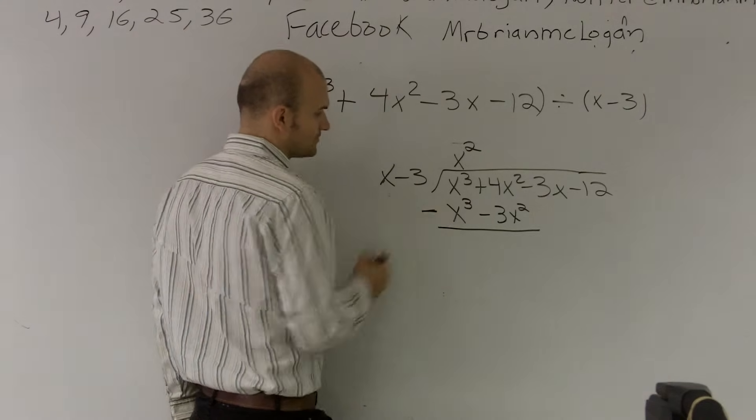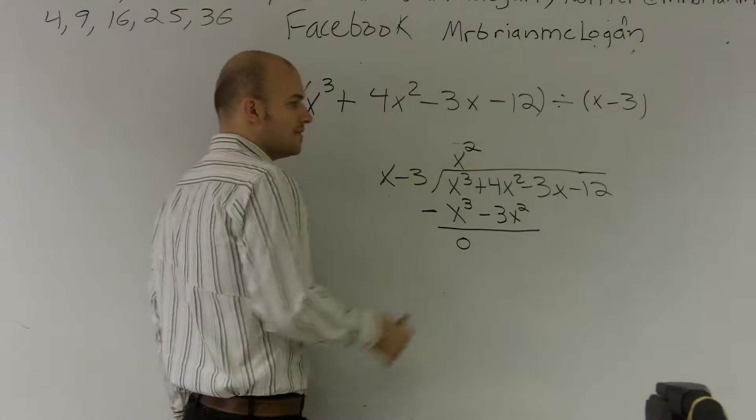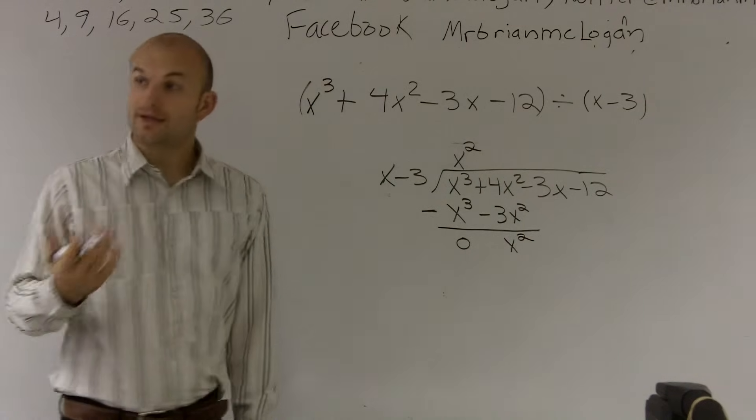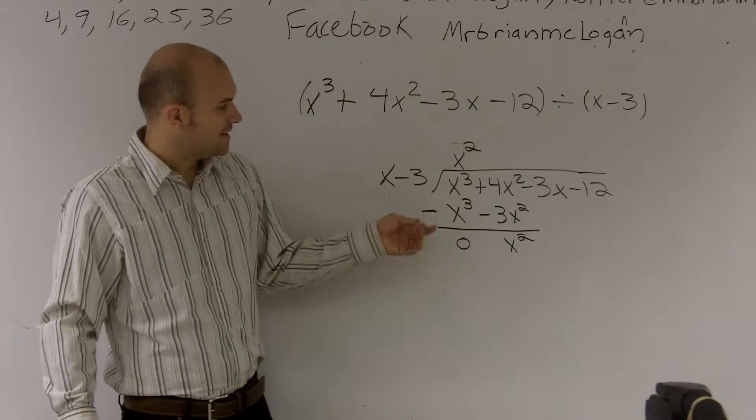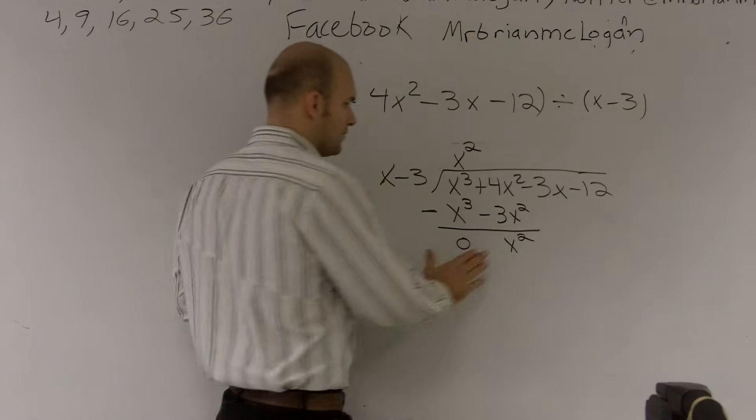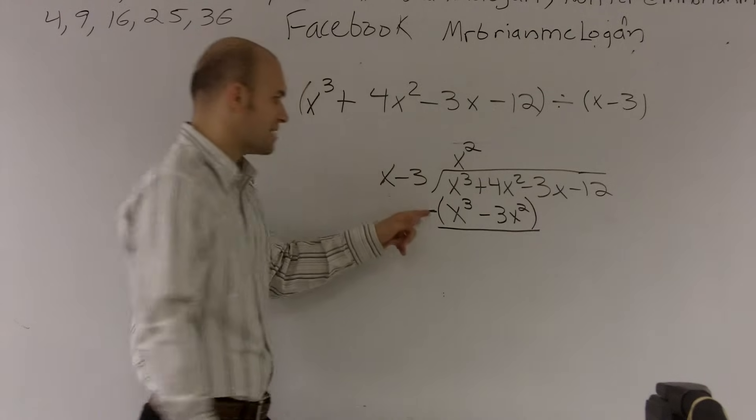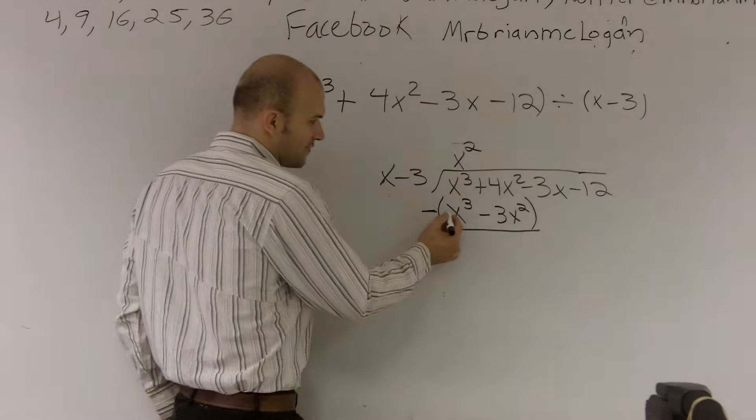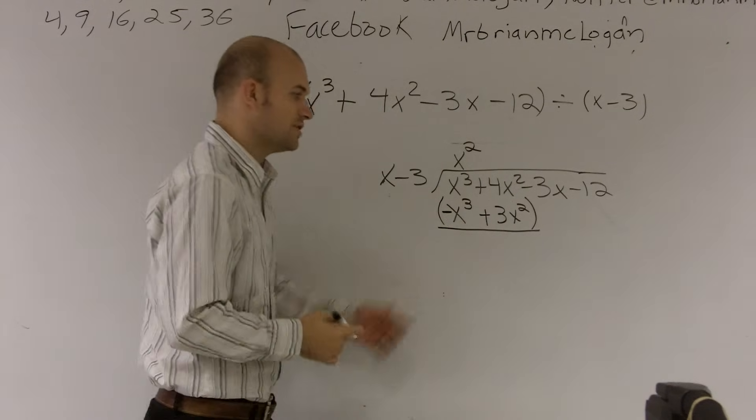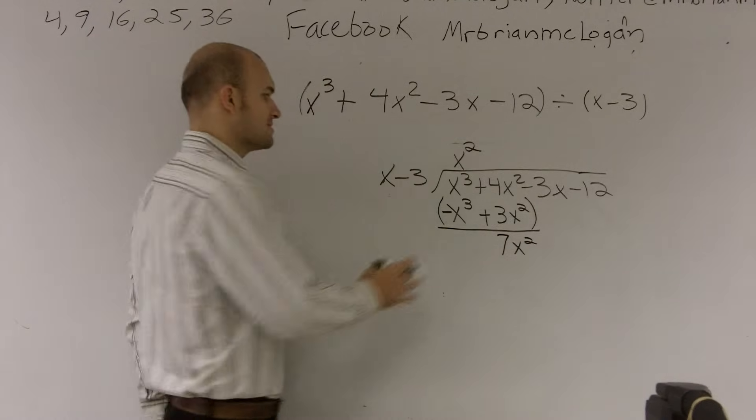And then x cubed minus x cubed is 0x cubed, which is 0. Then they do 4x squared minus 3x is x squared. It's plus. It is plus, because what you need to notice is I'm subtracting this whole line. So if you want to, you could think of this as like parentheses. I'm subtracting everything that's on this line. So therefore, that's a negative, and that now becomes a positive. So it's really your answer is going to be 7x squared.